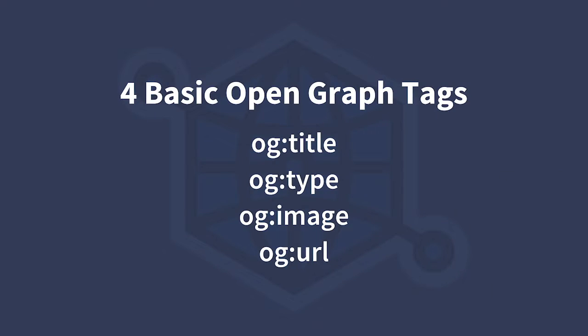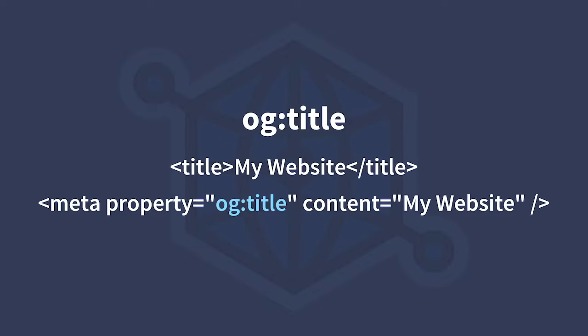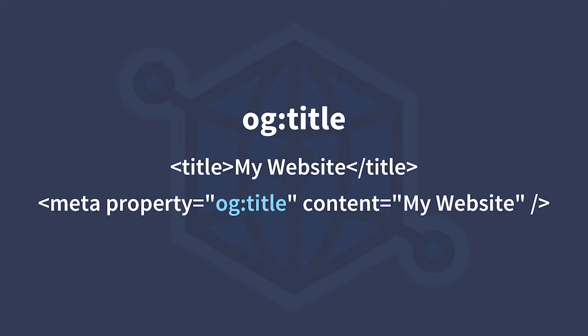The four basic Open Graph Tags are Title, Type, Image, and URL. Title will be the title of your page — it's usually the same thing as the title tag. Next you have the type of your page. For most websites it's probably just 'website', but this can be other things like 'article' or 'video'.